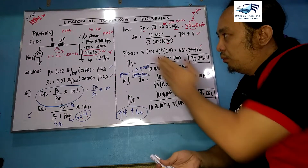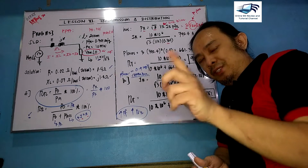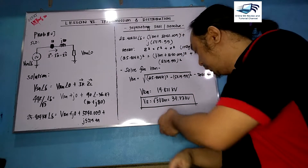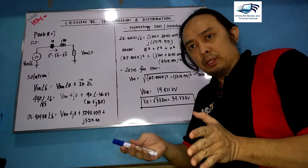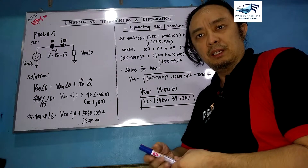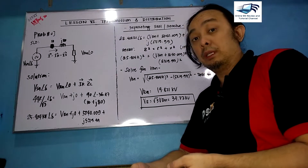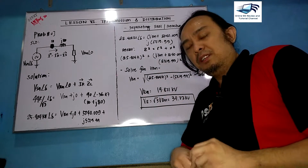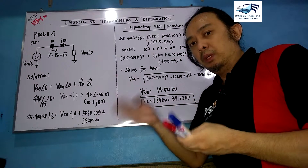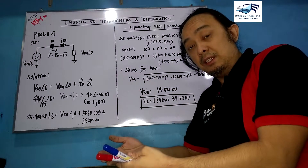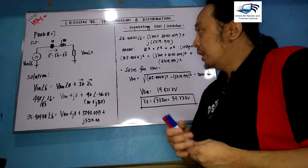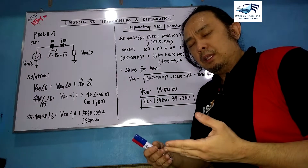We will now go forward to problem number six. This is problem number six on short lines — likely the last problem for short lines. In this problem, instead of VS being the unknown, VRN is the unknown variable. Let us read the problem first.